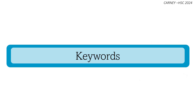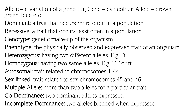Let's first look at some keywords. We've previously learned that a gene is a section of DNA. An allele is a variation of a gene. For example, if there is a gene for eye colour, the possible alleles are brown eyes, green eyes or blue eyes. A dominant trait refers to one that occurs more often in a population, whereas a recessive trait occurs least often in a population.